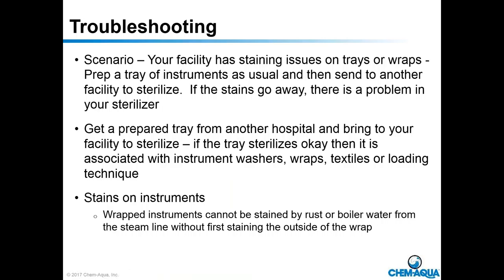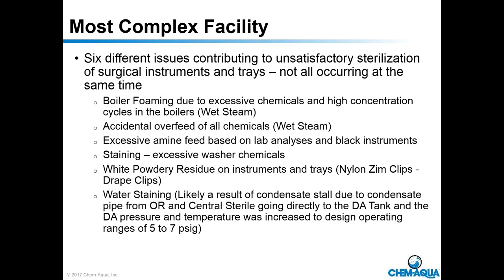Quick troubleshooting: if your facility has staining issues, have them prep a tray of instruments as usual and send it to another facility to sterilize. If the stains go away, there's a problem in your sterilizer. Conversely, get a prepared tray from another hospital and sterilize it at your facility — if it sterilizes okay, the issue is associated with the instrument washers, wraps, textiles, or loading technique. Stains on wrapped instruments cannot come from rust or boiler water from the steam line without first staining the outside — so if the outside of the wrap is not stained, it did not come from the steam. You may also have more than one problem simultaneously, which creates a nightmare troubleshooting scenario.